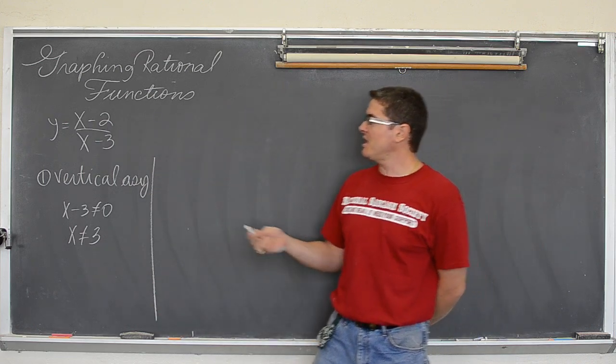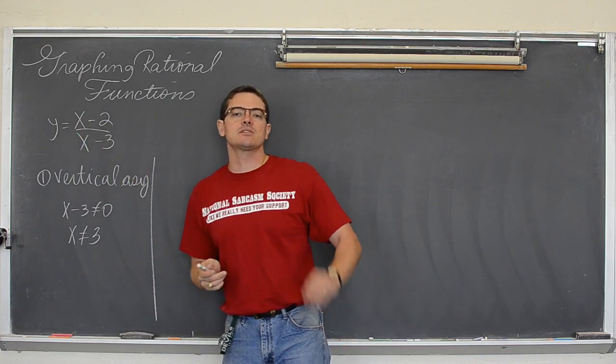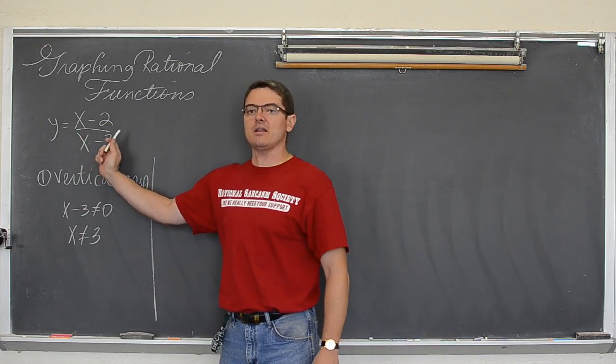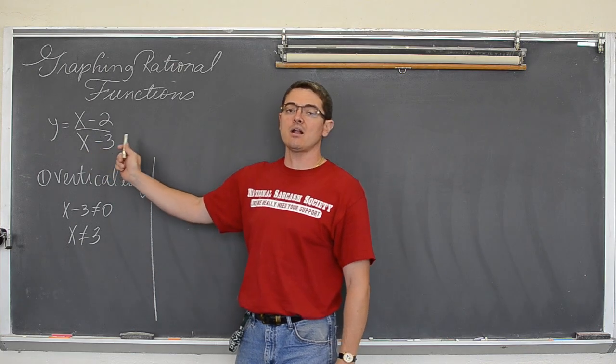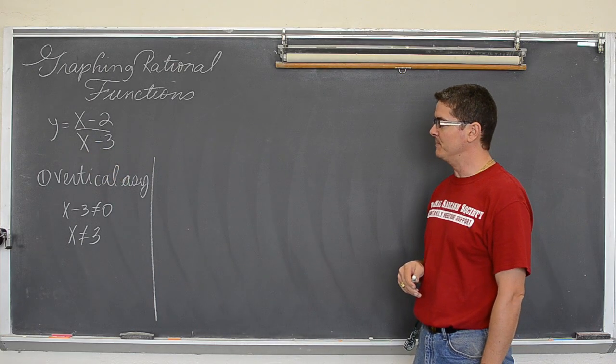Now in the next example you are going to see if you have a zero in your denominator and it cancels out, that is actually going to make a hole. But otherwise whenever that denominator can equal zero and it cannot be cancelled out, that is going to yield a vertical asymptote.